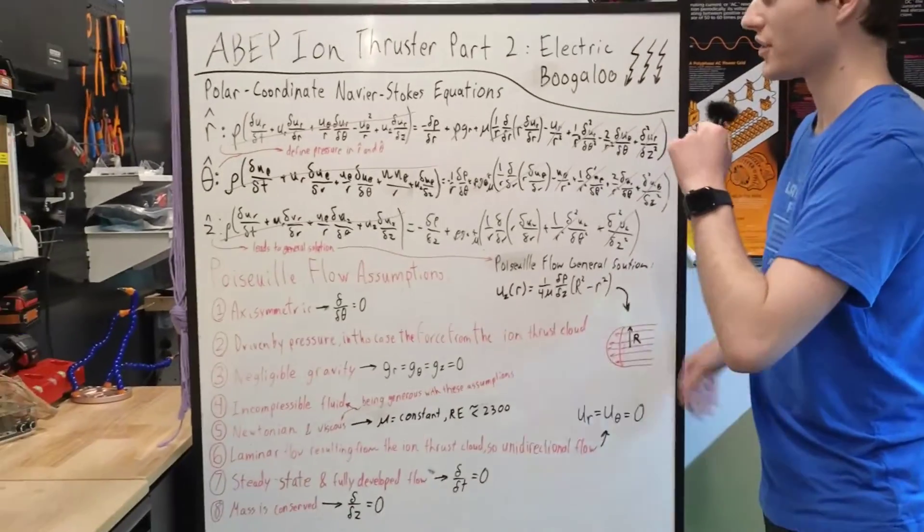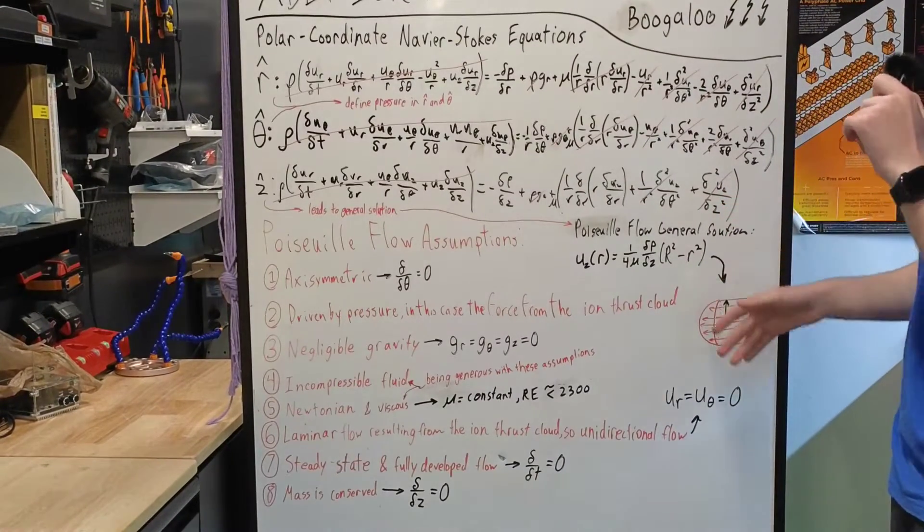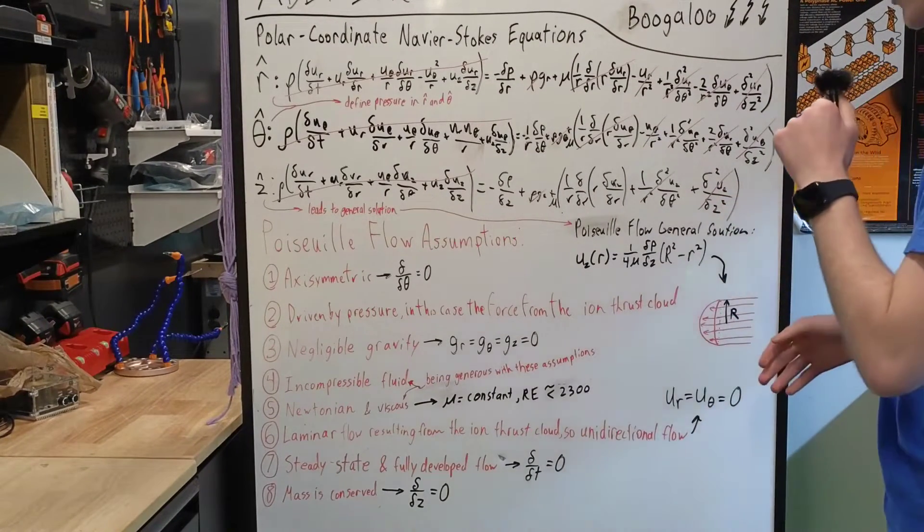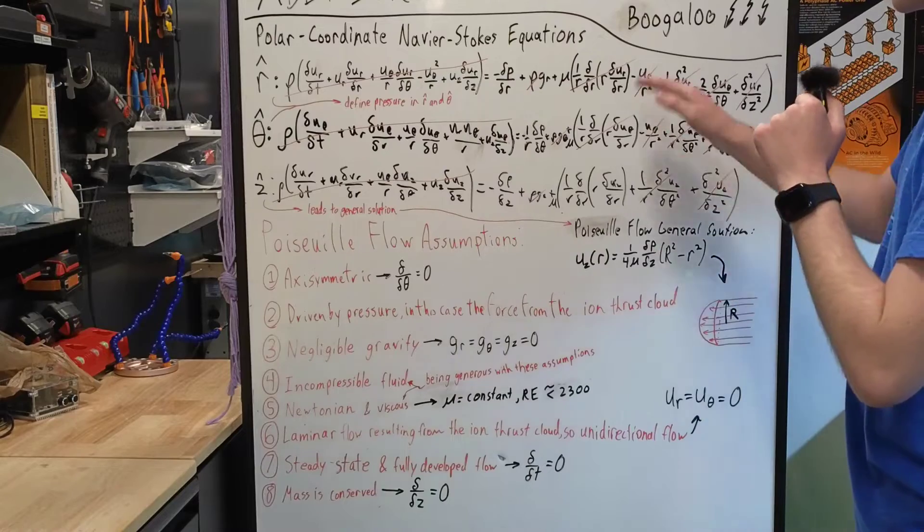Now for the math part. Taking the polar coordinate Navier-Stokes equations and the following assumptions - we're being a bit generous with the assumptions here since we're working with air - we can see that a lot of terms cancel.